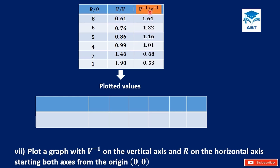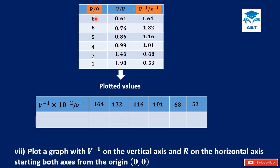We need the values of V inverse. It will be difficult to plot 1.64 on the graph, so we convert it to standard form by moving the point, giving us 164 times 10 exponent negative 2 per volt. Similarly, the other values become 132, 116, 101, 68, and 53, all times 10 exponent negative 2 per volt. For the values of R, they are whole numbers so we can easily plot them and don't need to convert to standard form.